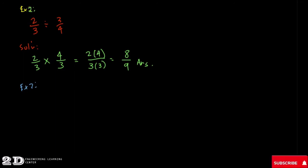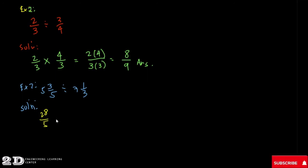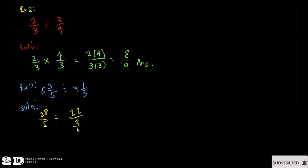Let's have another example using mixed numbers. We have five and three-fifths divided by seven and one-third. First, convert each mixed number to an improper fraction. Five and three-fifths becomes five times five plus three, which is 28 over 5. Seven and one-third becomes seven times three plus one, which is 22 over 3.